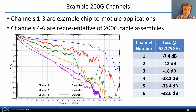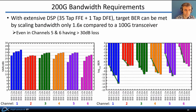The following slides analyze 200 Gbps links over six example channels, having channel losses progressively increasing from 7.4 dB up to 38.6 dB. With extensive DSP — in this case a 35-tap FFE and 1-tap DFE — our target bit error rate can be met by scaling the bandwidth only 1.6 times compared to that of a 100 Gbps transceiver. Even in channels five and six, having over 30 dB channel loss, adequate bit error rate is achieved with a bandwidth of only 1.6 times that of the 100 Gbps transceiver.